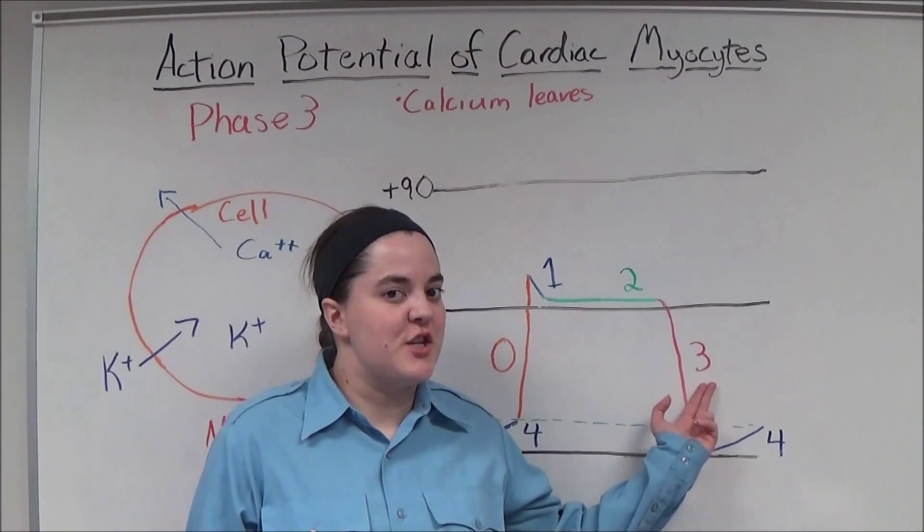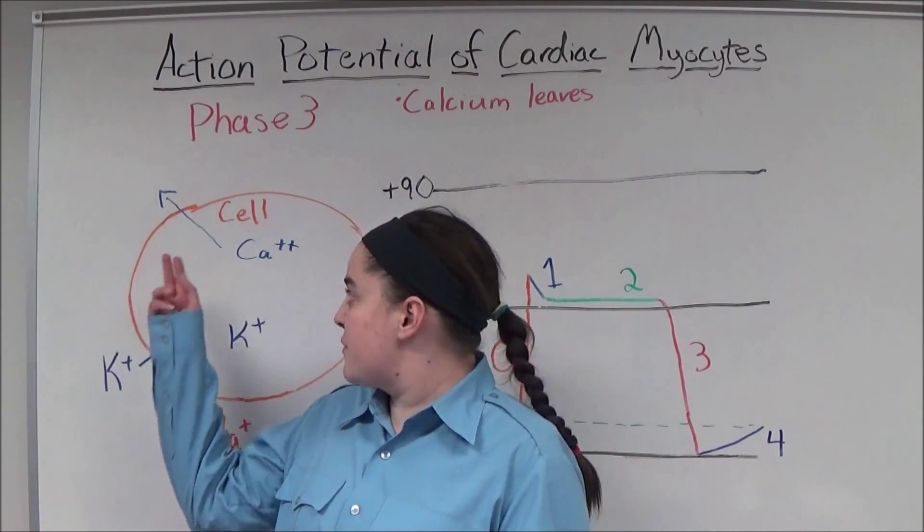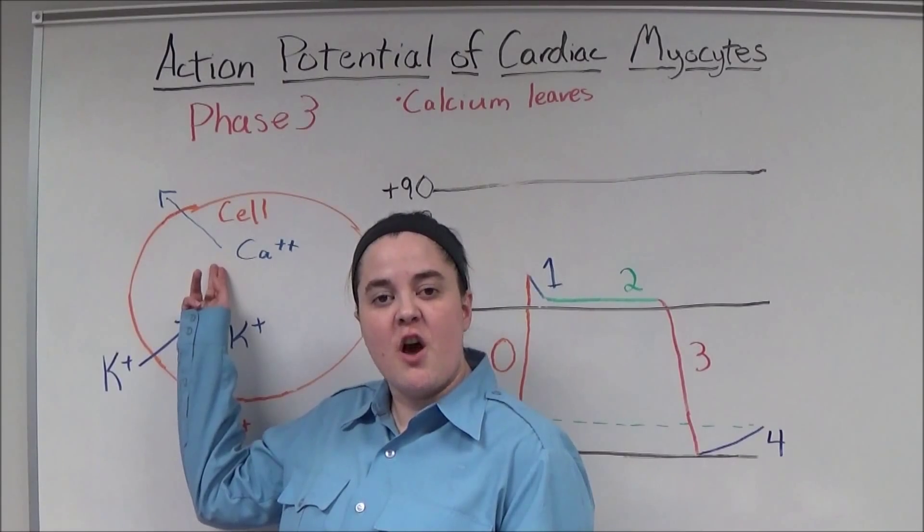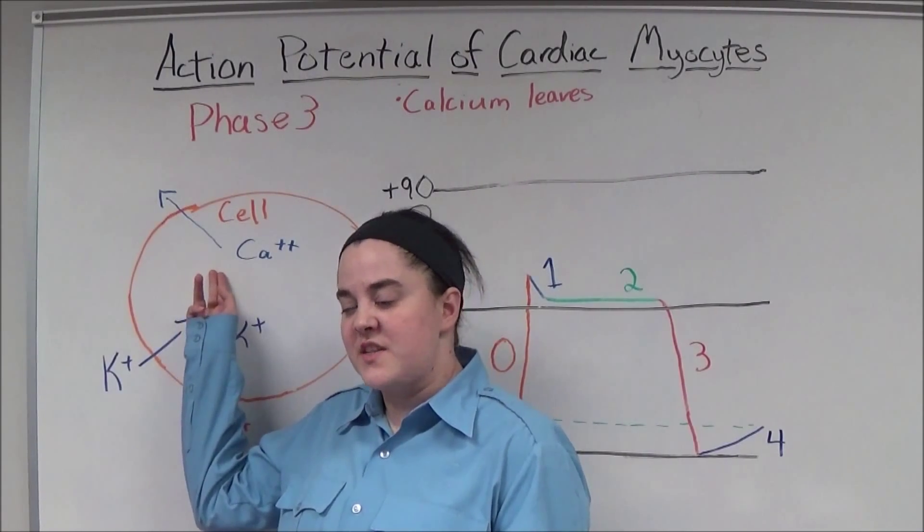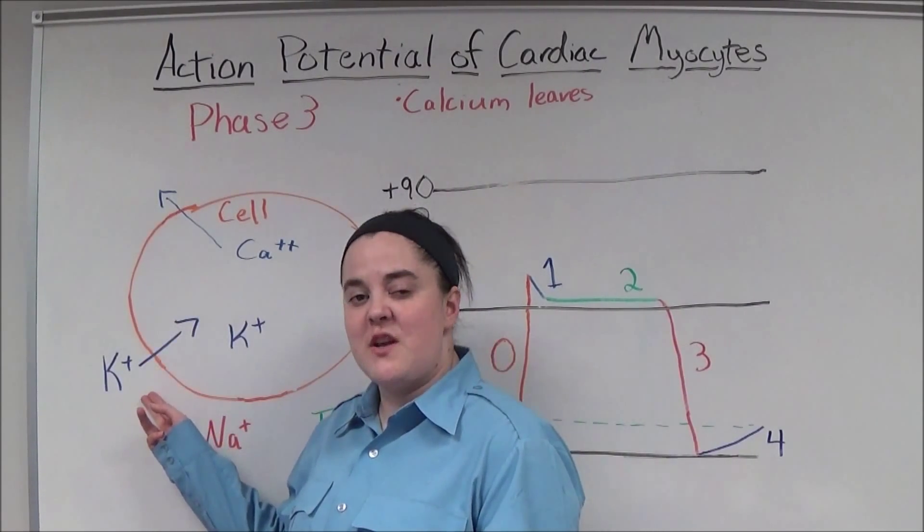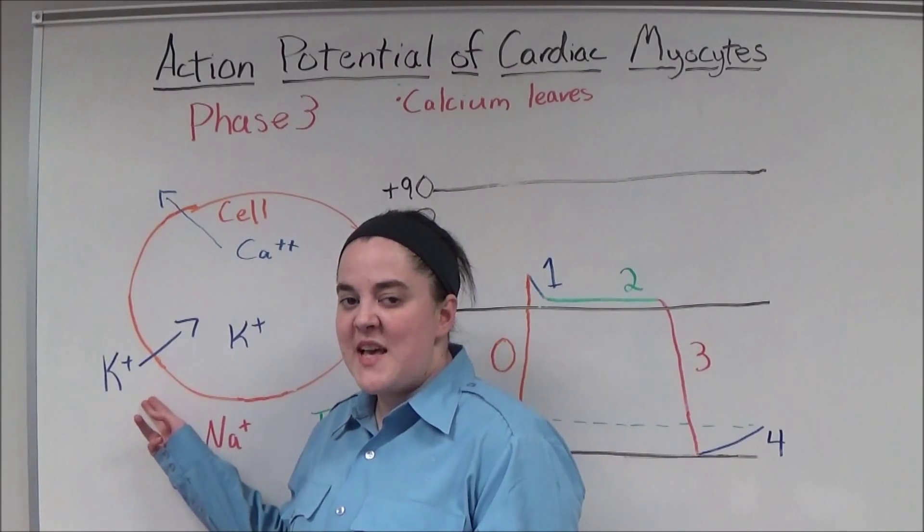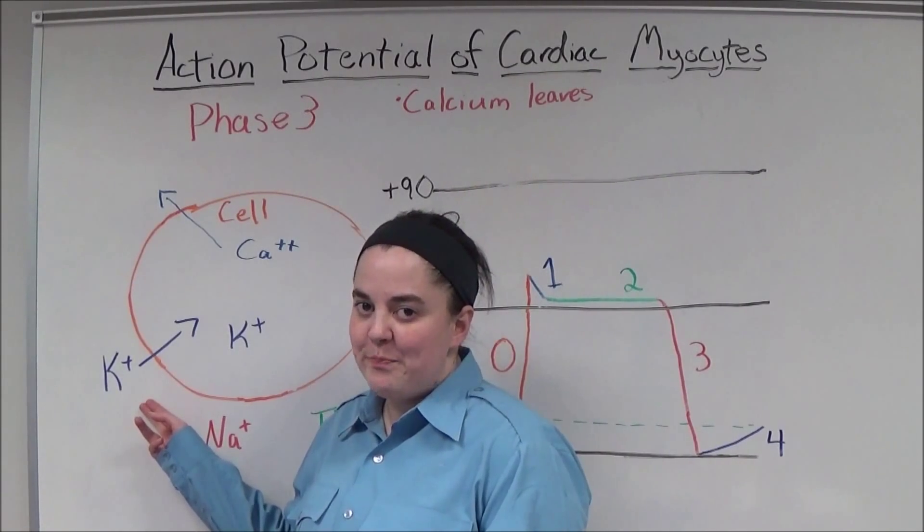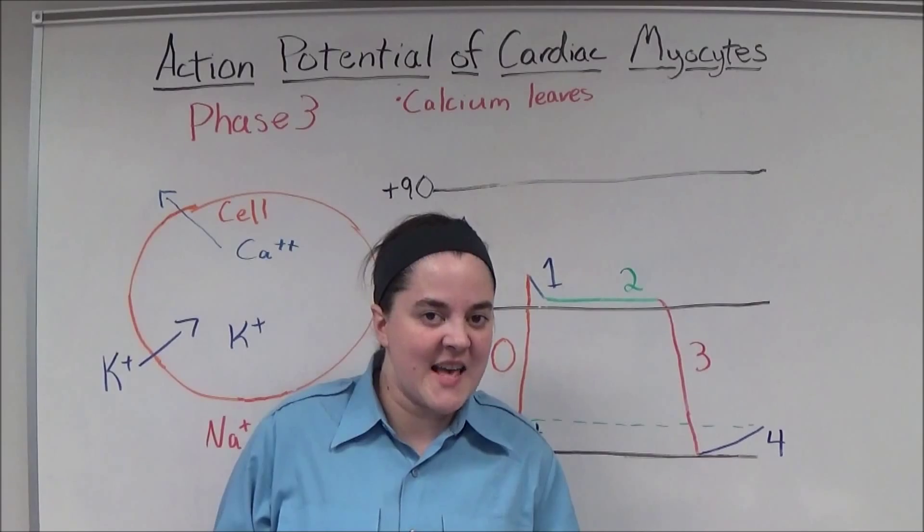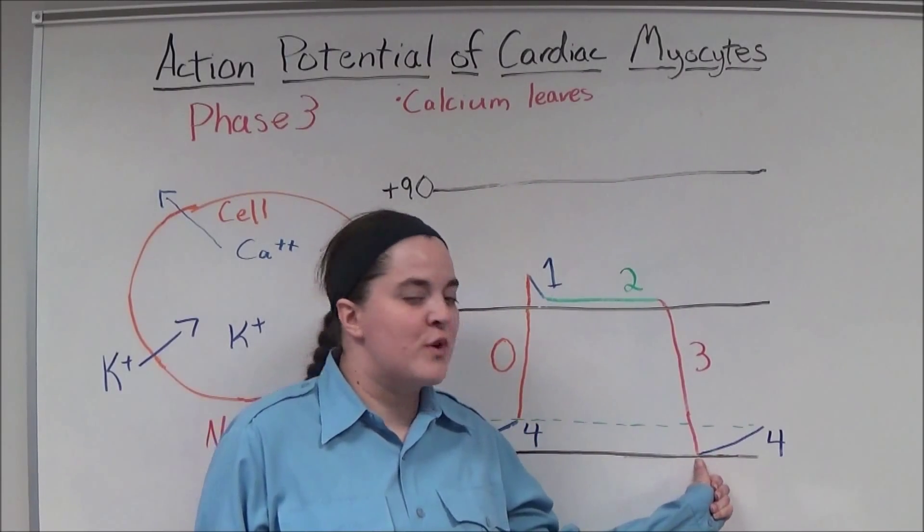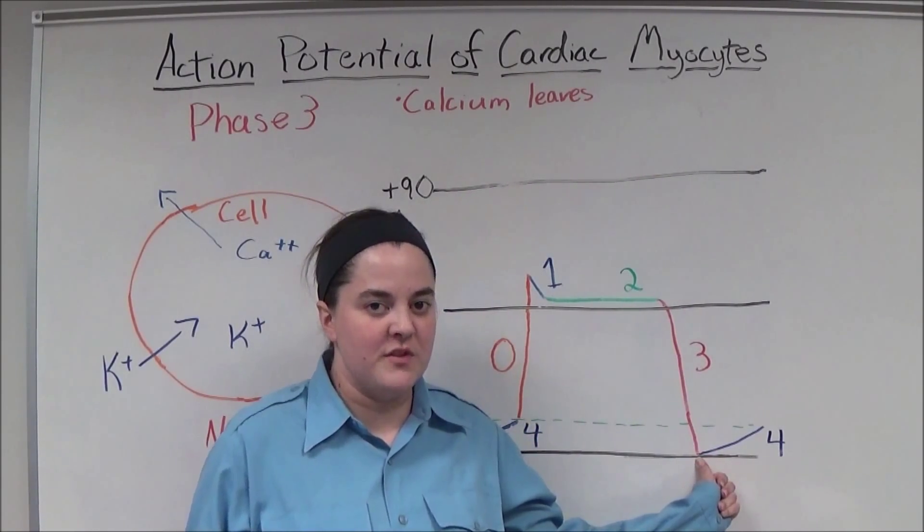Phase three is the repolarization of the cell. During phase three, the calcium channels close, and calcium is pumped out of the cell, but the potassium channels remain open, and potassium continues to enter the cell. Now, because there's now more potassium than calcium, the action potential returns to negative 90 millivolts.